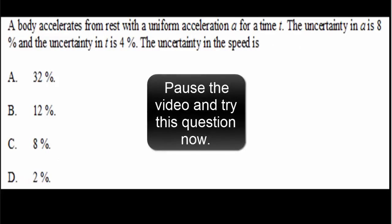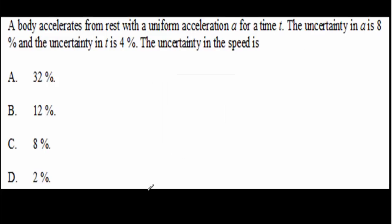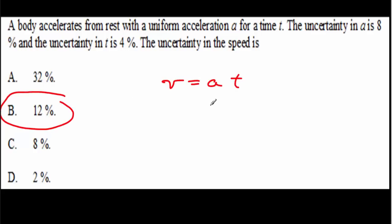Here's a second question — pause the video and try it yourself. The answer is 12%. Speed equals acceleration times time, so we're multiplying, meaning we add the percentage uncertainties: 8% for acceleration plus 4% for time gives a grand total of 12%.